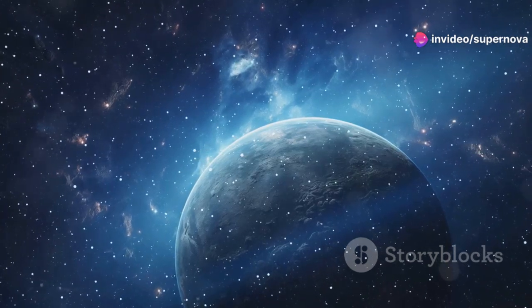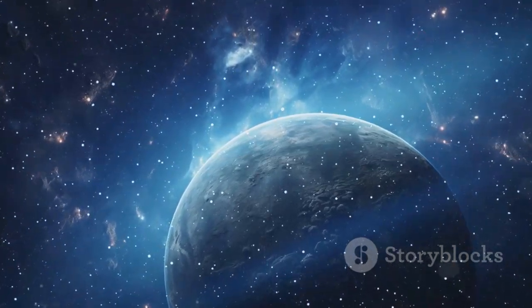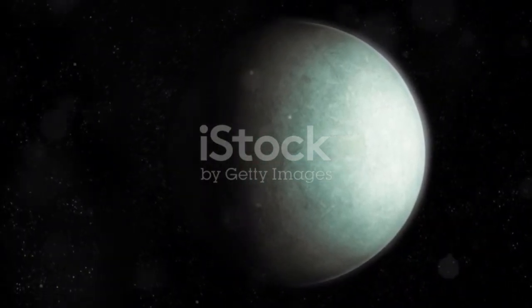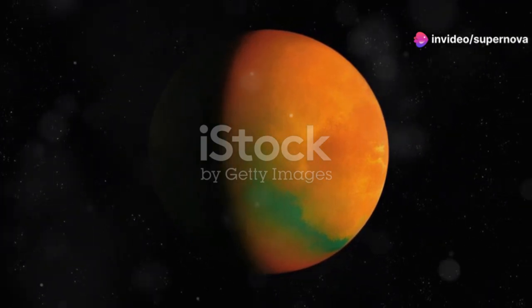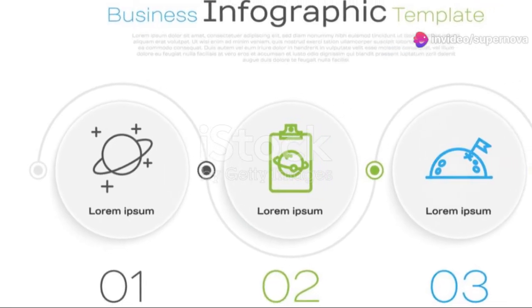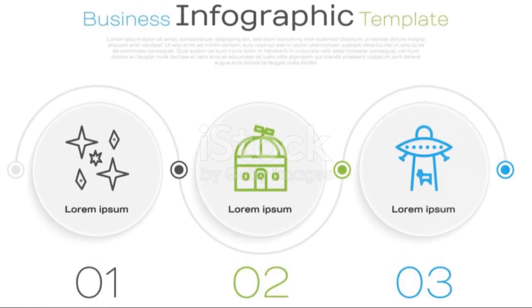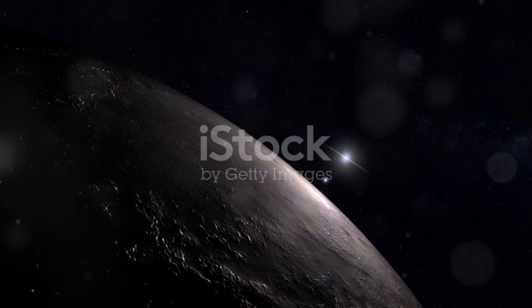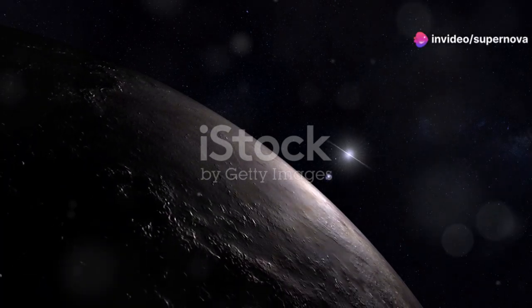Proxima b is a little bigger than Earth, with a mass about 1.17 times that of our home planet. Scientists call it a super-Earth, a type of exoplanet larger than Earth but smaller than ice giants like Neptune and Uranus. It orbits in the habitable zone of Proxima Centauri, where conditions might be just right for liquid water to exist. This zone is also known as the Goldilocks zone, where it's not too hot and not too cold, but just right for life as we know it.